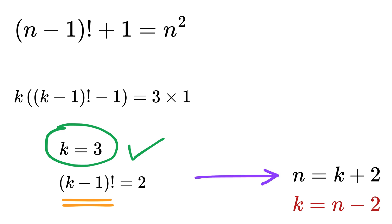This means n equals k plus 2 or 3 plus 2, which is 5, and that's it. This is the only possible solution for n.